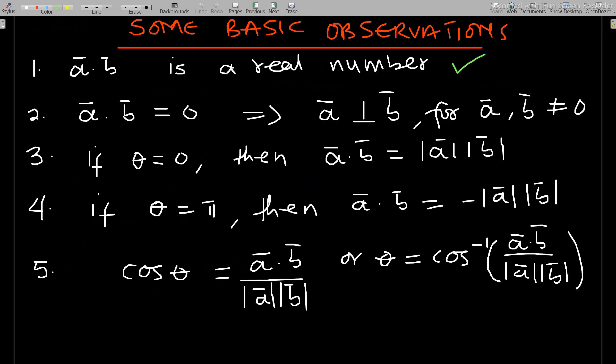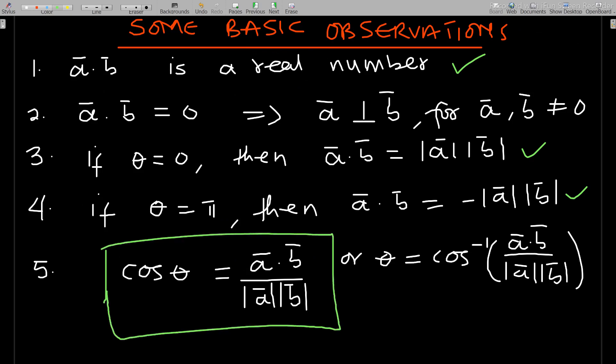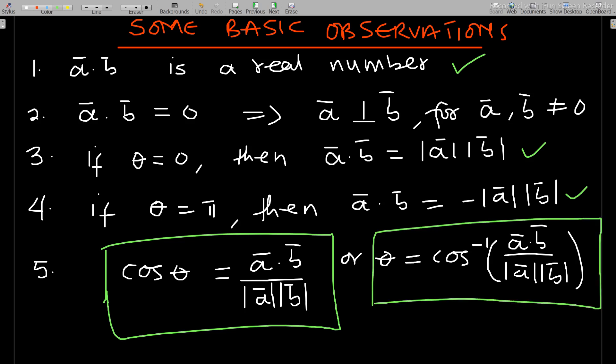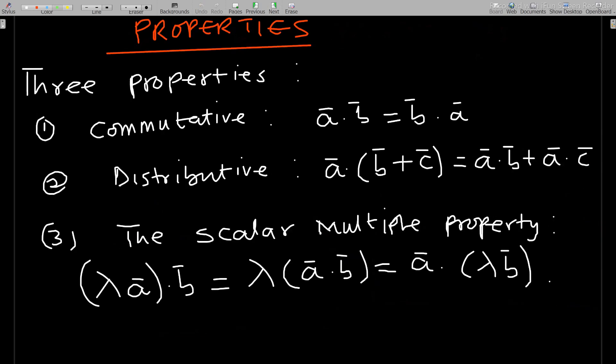If theta is zero, then a dot b equals the product of the magnitudes, since cosine of zero is one. If theta equals pi (180 degrees), then a dot b equals negative of the product of the two magnitudes. Also, cosine of the angle can be made the subject of the relation, giving us a formula for the angle.